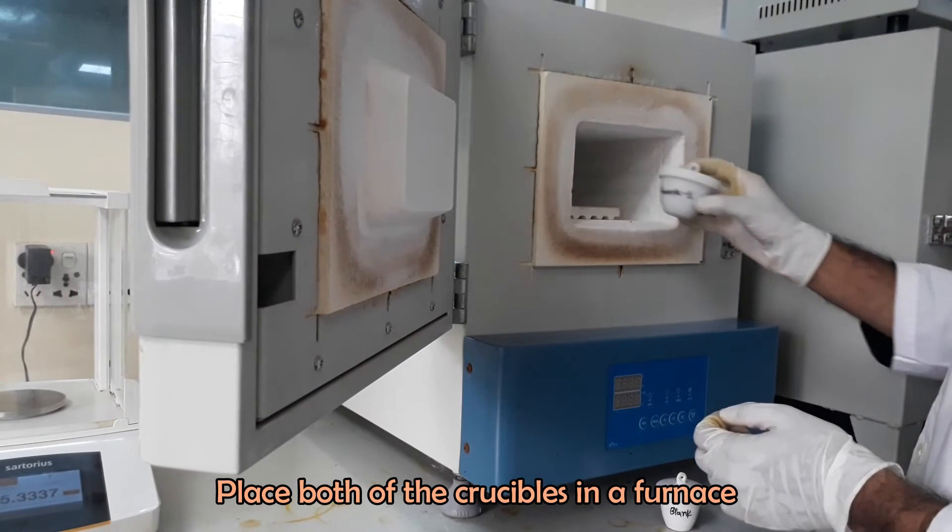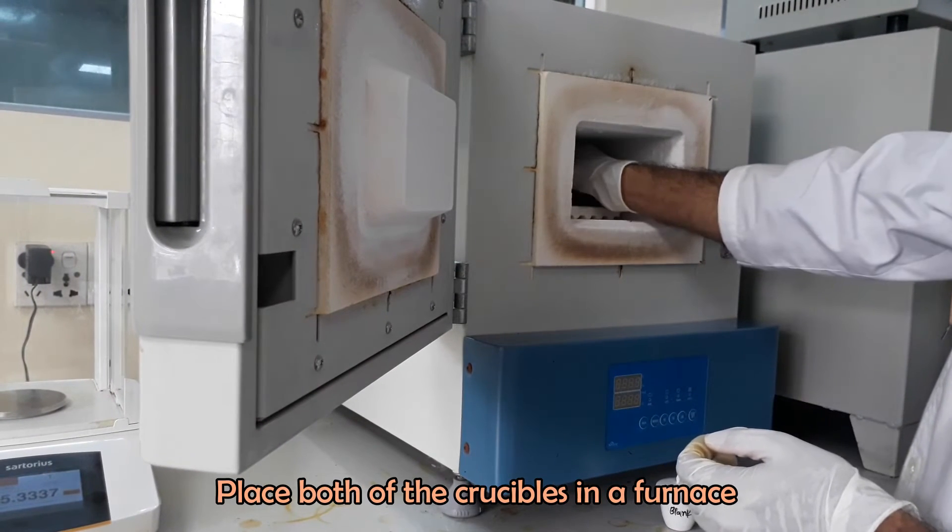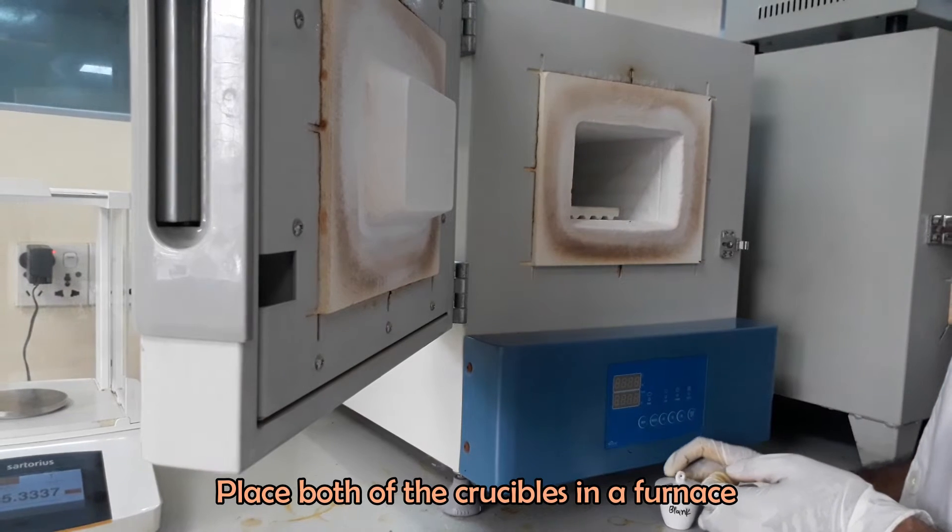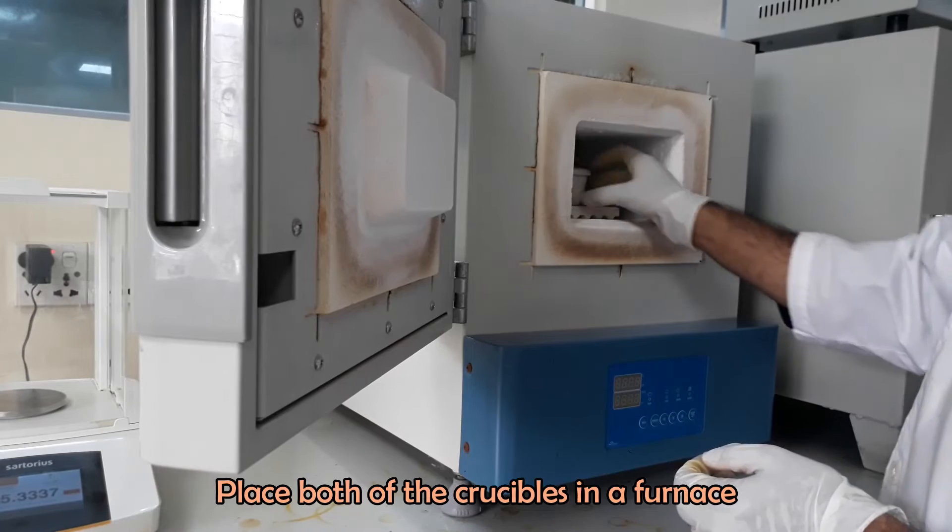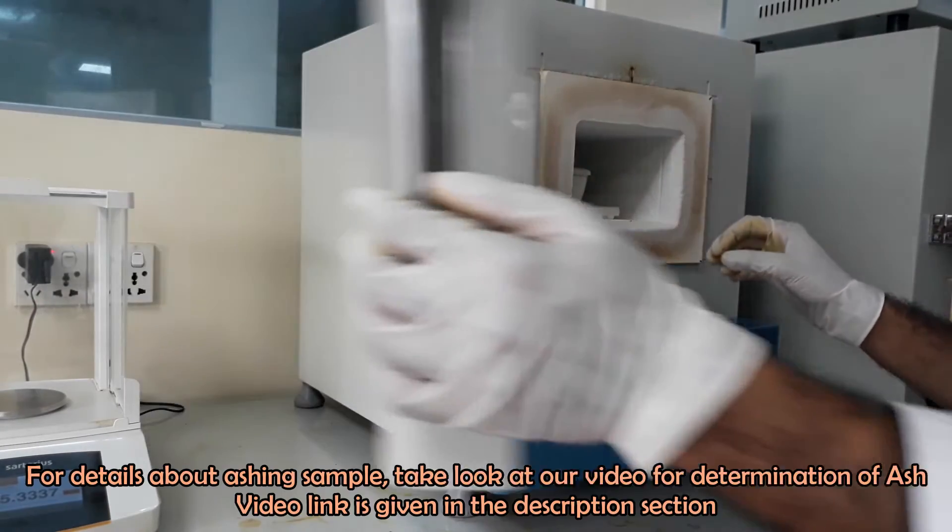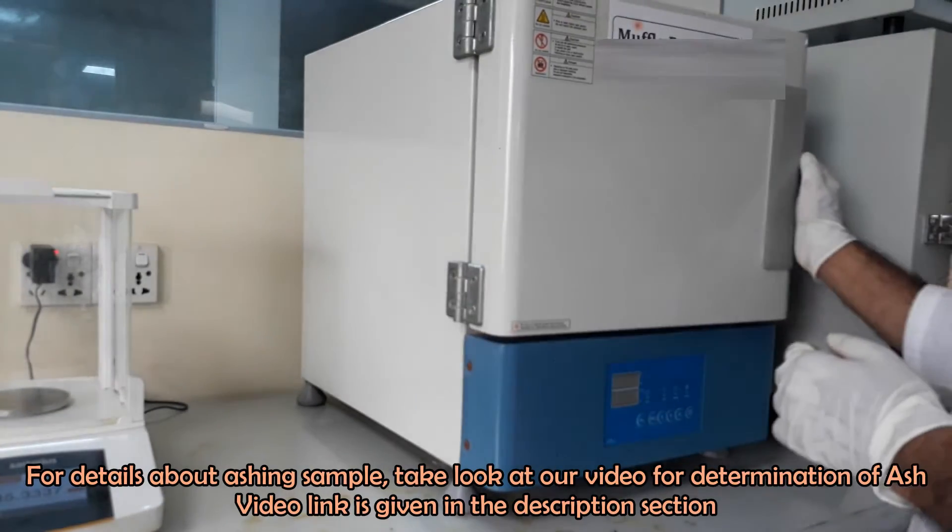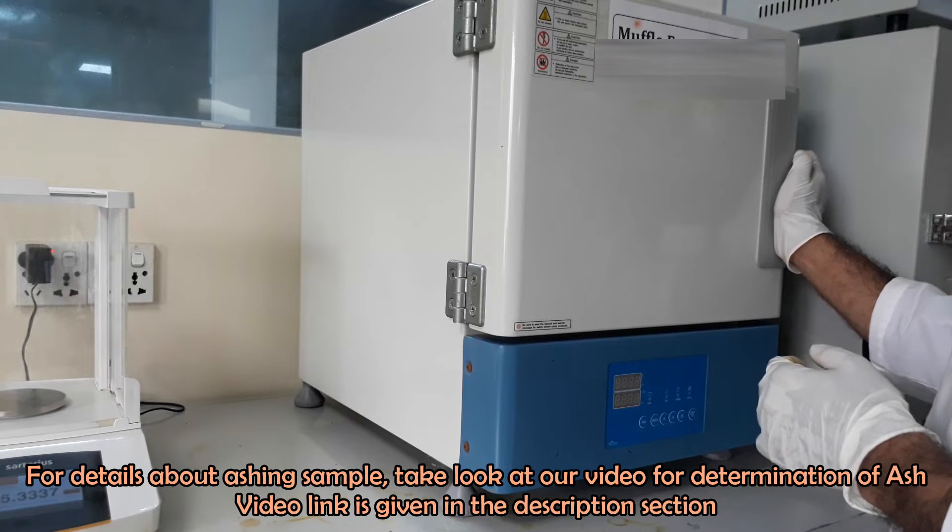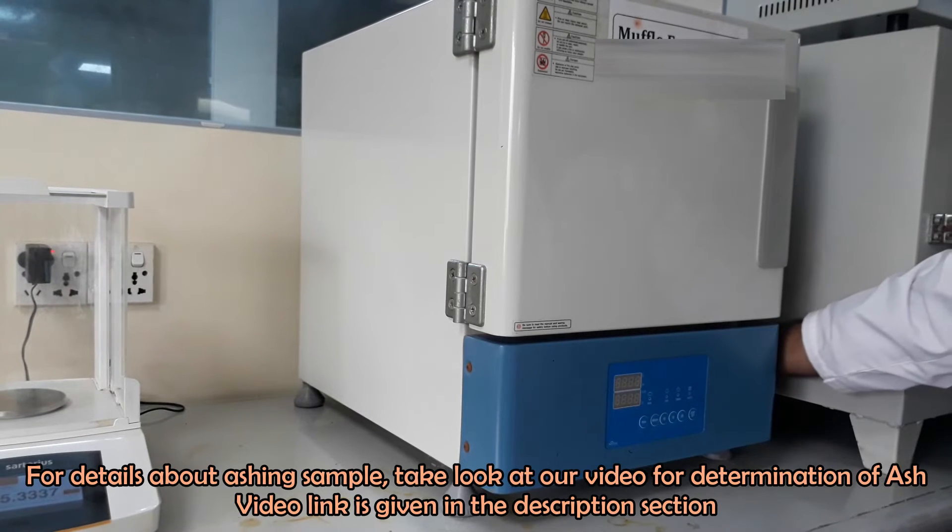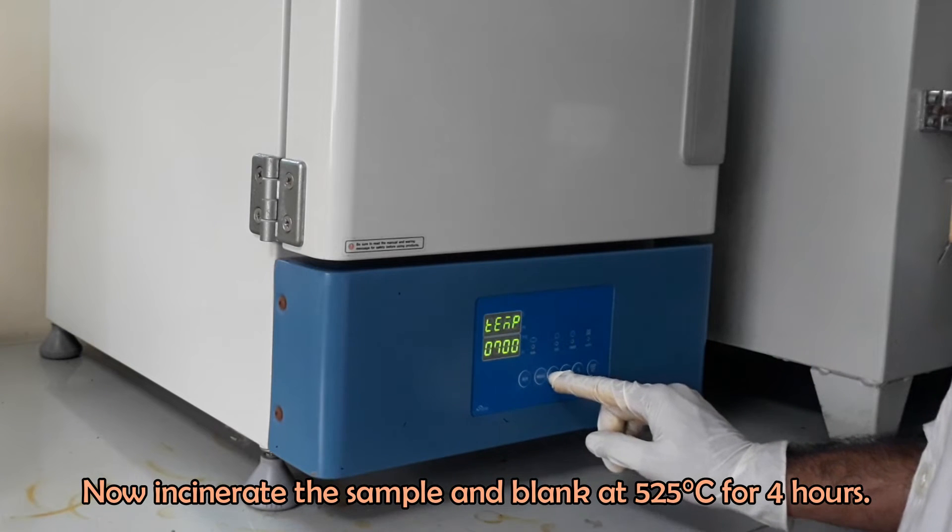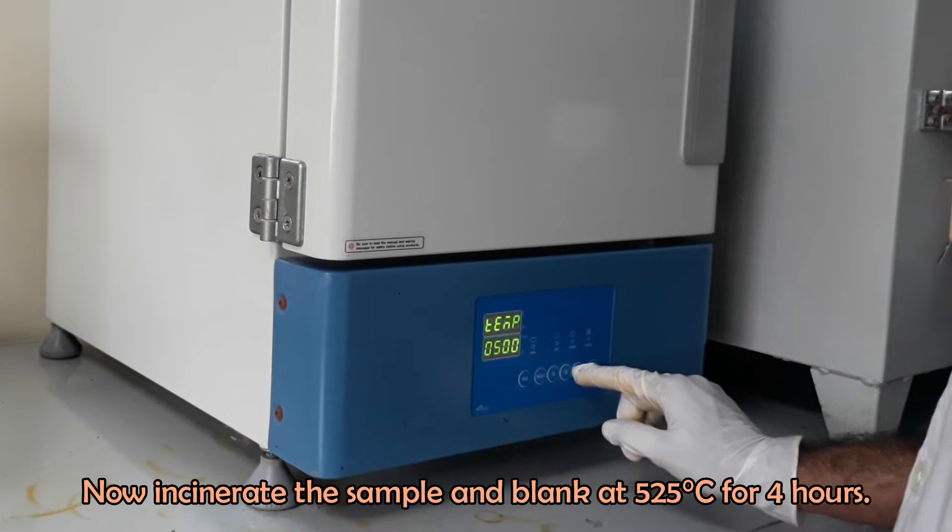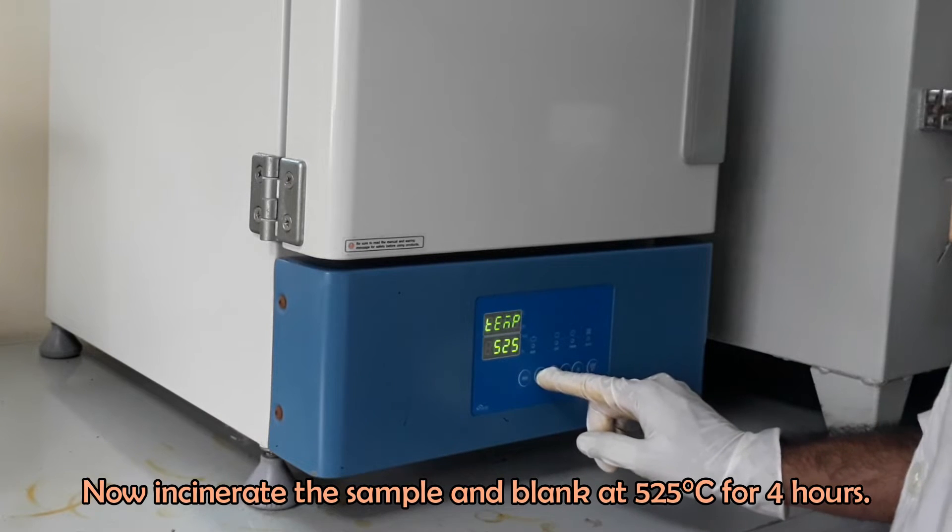Now place the crucible inside the furnace. For details about ashing sample, take a look at our video for determination of ash. Video link is given in the description section. Now incinerate the sample and blank at 525 degrees Celsius for 4 hours.